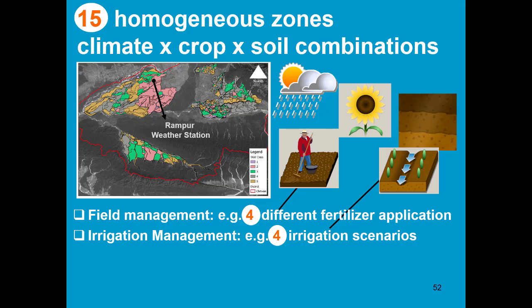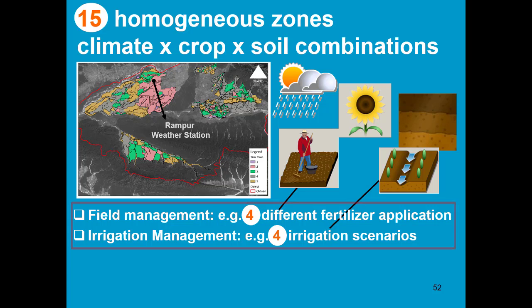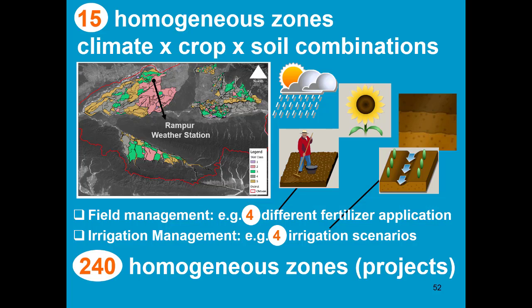If we want to run simulations for different field management and irrigation management, we have to create more homogeneous zones. In this example, we take 4 different fertilizer applications and 4 different irrigation scenarios: rain-fed, full irrigation, and 2 types of deficit irrigation. So we end up with 240 homogeneous zones.